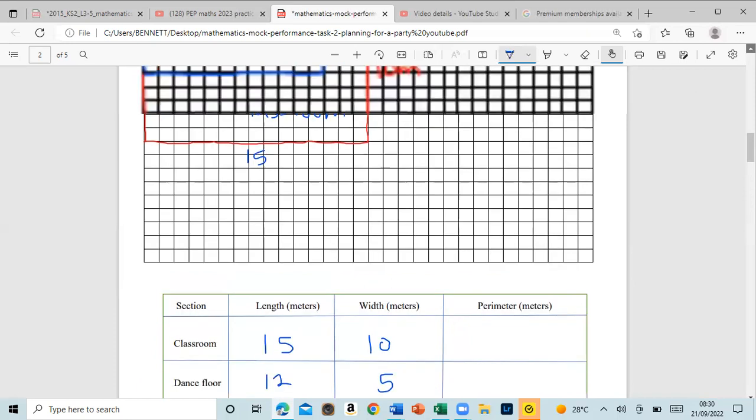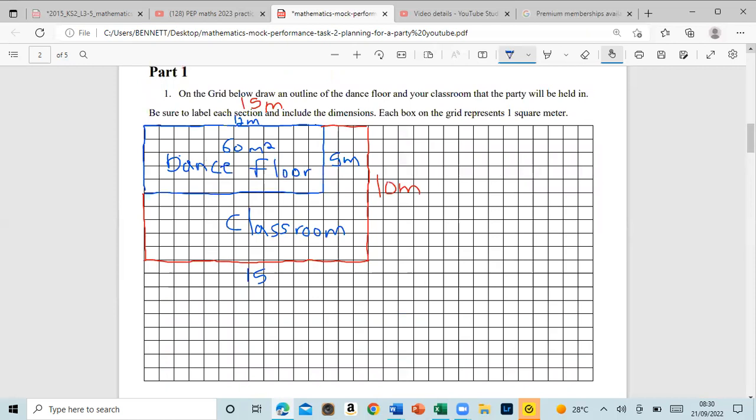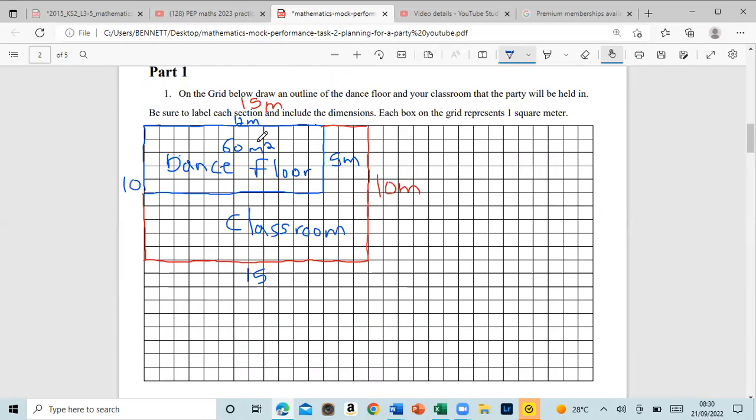Now it says the perimeter. The perimeter of the classroom—what you guys enjoy in my class—the perimeter is the total distance around. It will be 15, then 10, another 15 meters, another 10 meters. Let us add that: 15 plus 15, 10 plus 10. That's 30, 40, 50. So that's 50 meters.